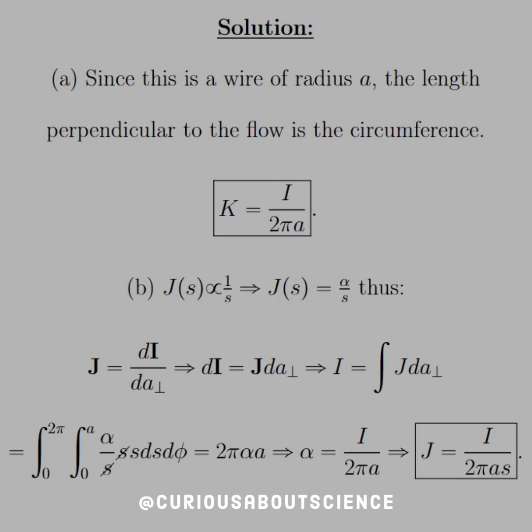For B, we have a little more work to do. It says that J was proportional to the inverse, so that's why we have J(s) is proportional to 1 over s. We can write this in closed form with J(s) equals α over s, where α is the separation constant.